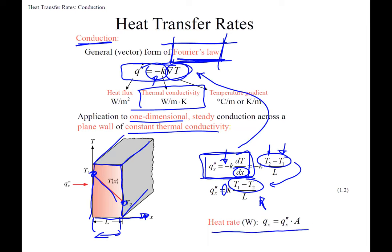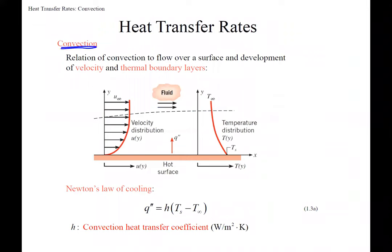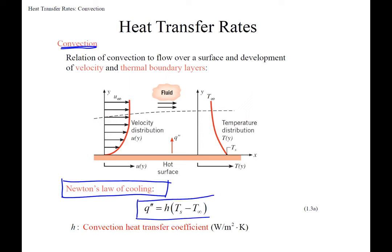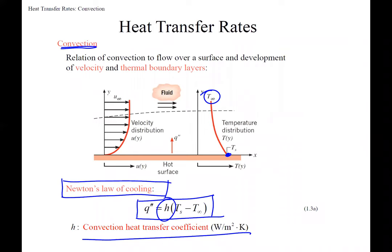The heat rate is the heat flux times area in the x-direction. For convection, we use Newton's Law of Cooling, which looks even simpler. It uses the temperature of the surface and the temperature T-infinity of the fluid outside our boundary layer, multiplied by the convection coefficient h. Note: in heat transfer, h is the convection heat transfer coefficient, not enthalpy.